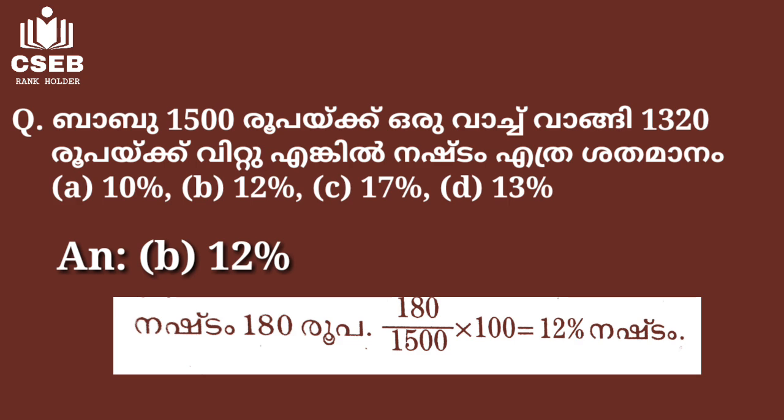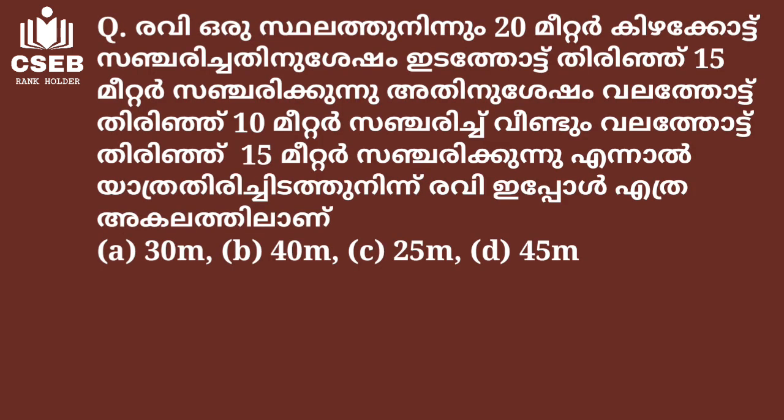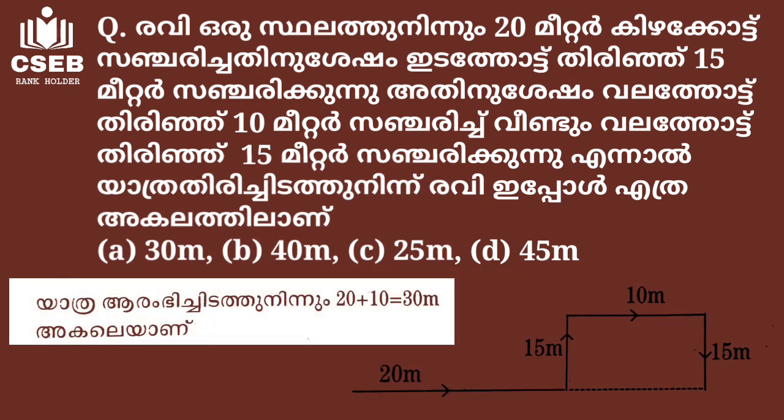20 meter, 15 meter, 10 meter. Options: A: 30 meter, B: 40 meter, C: 55 meter, D: 45 meter. 20 plus 10 equals 30 meter. Option A: 30 meter.